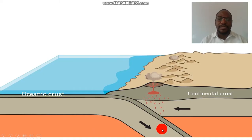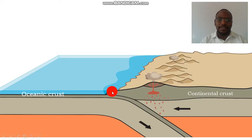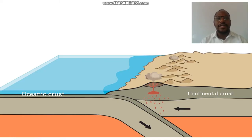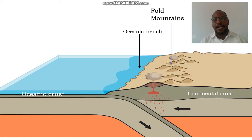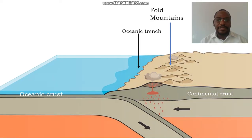Then the continental crust is compressed to form the fold mountain. You're seeing that the oceanic crust is sinking into the mantle and the continental crust is compressed to form fold mountains. This region where we have the subsidence is called a subduction zone, and it is marked by an oceanic trench. As the oceanic crust sinks beneath the continental crust, the continental crust is being compressed and it is forming fold mountains.